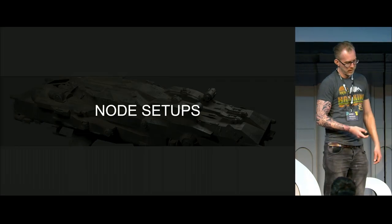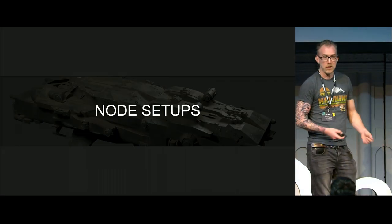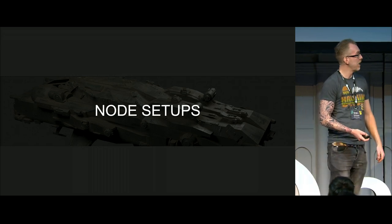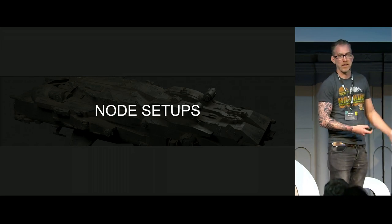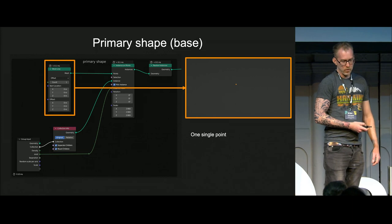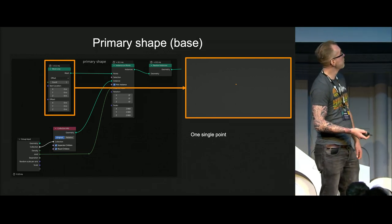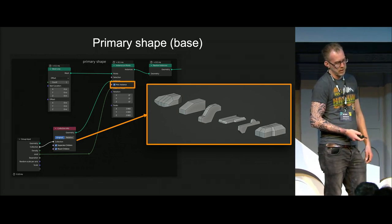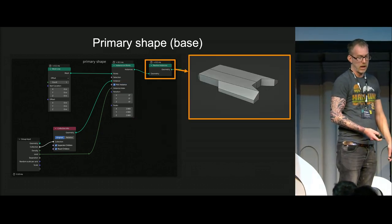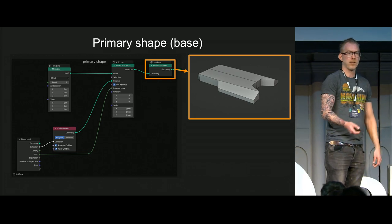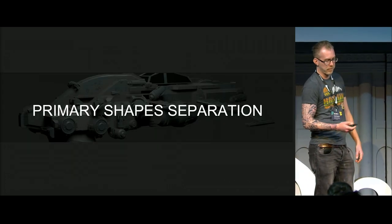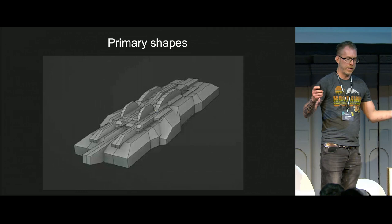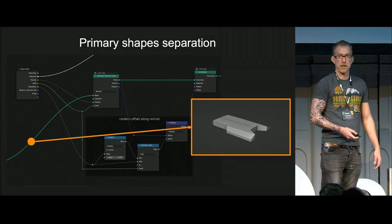Let's dive into the node setup. Due to time limitation I won't be able to go over everything, but this will be a cherry pick. I start off with a single point using the mesh line node. Then I have the primary shape that comes into the collection. I use pick instance to just pick one of these objects. Then I realize the instances so I can mess around with the attributes on the points. Primary shape separation — this is where we separate the primary shapes so they get more complex shapes.